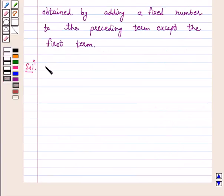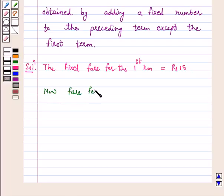We have the fixed fare for the first kilometer is equal to rupees 15. Now, fare for the second kilometer is equal to rupees 15 plus 8 which is equal to rupees 23.